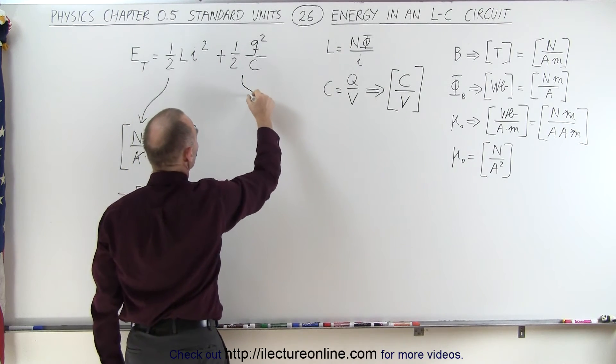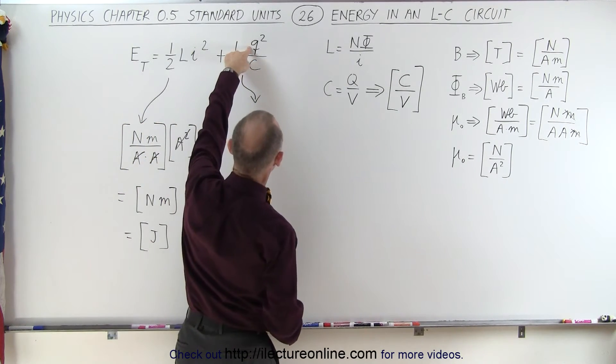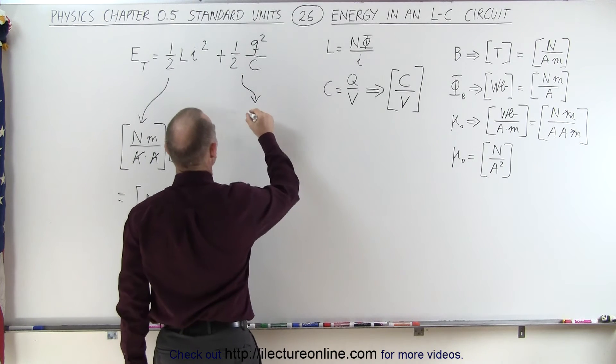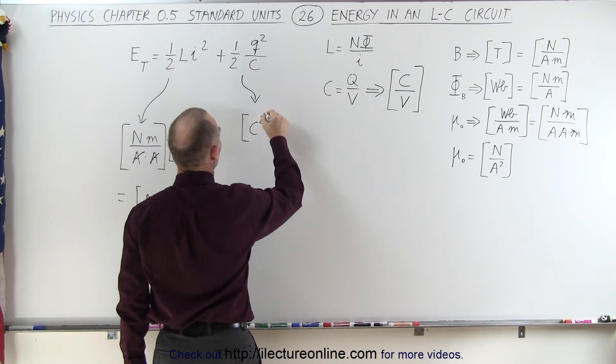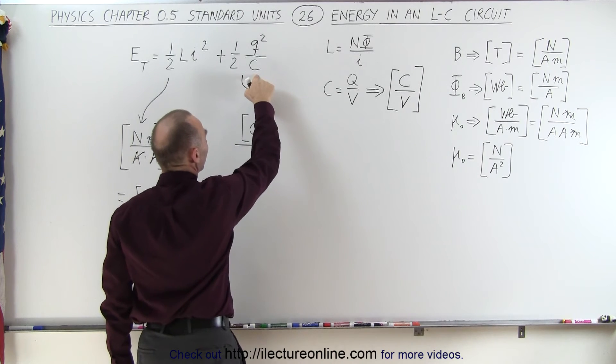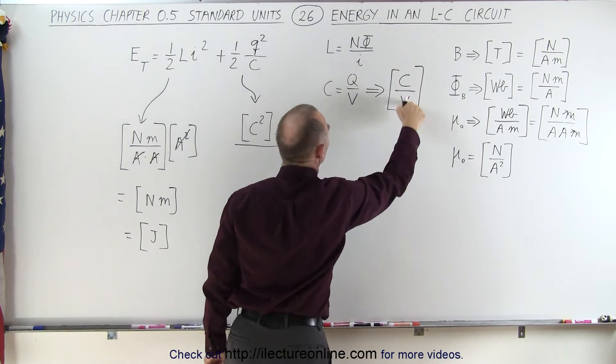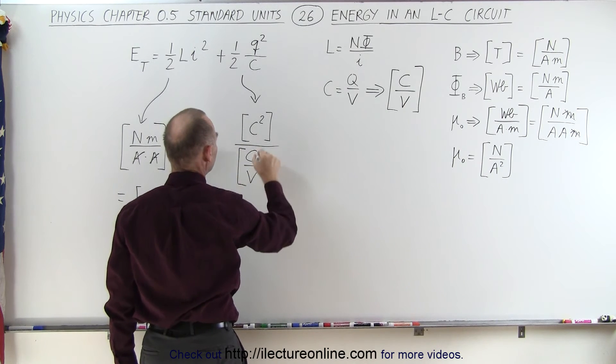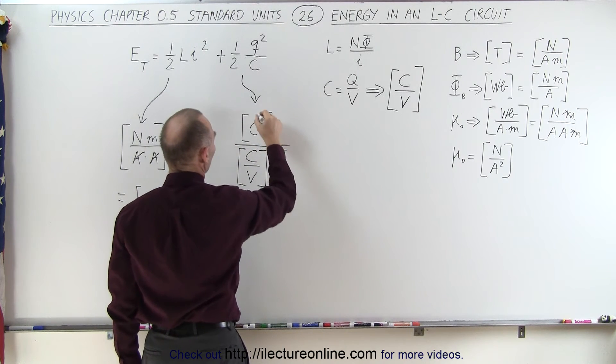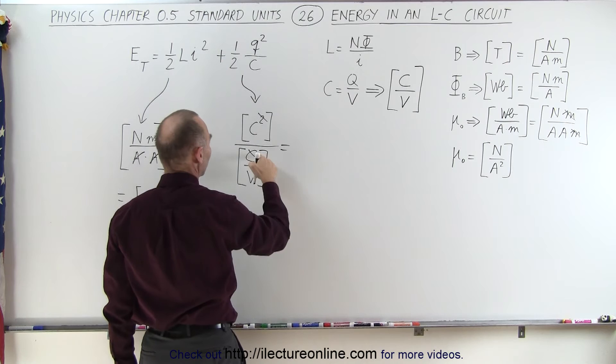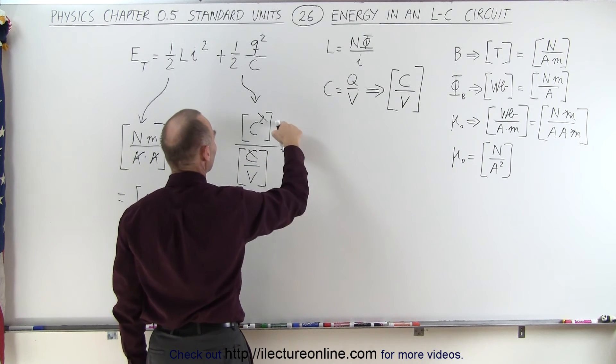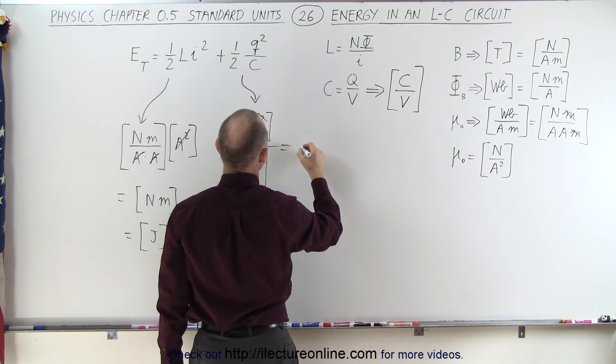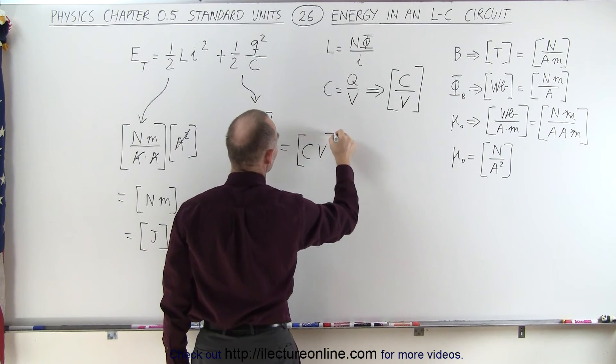And looking at the units here, charge squared, that would be coulombs squared in the numerator. So coulombs squared in the numerator divided by the denominator, which is capacitance. That would be coulombs per volt. Notice that one of the coulombs cancels out, and one over volt in the denominator moves to the numerator. So this is going to be equal to the units of coulombs times volts.